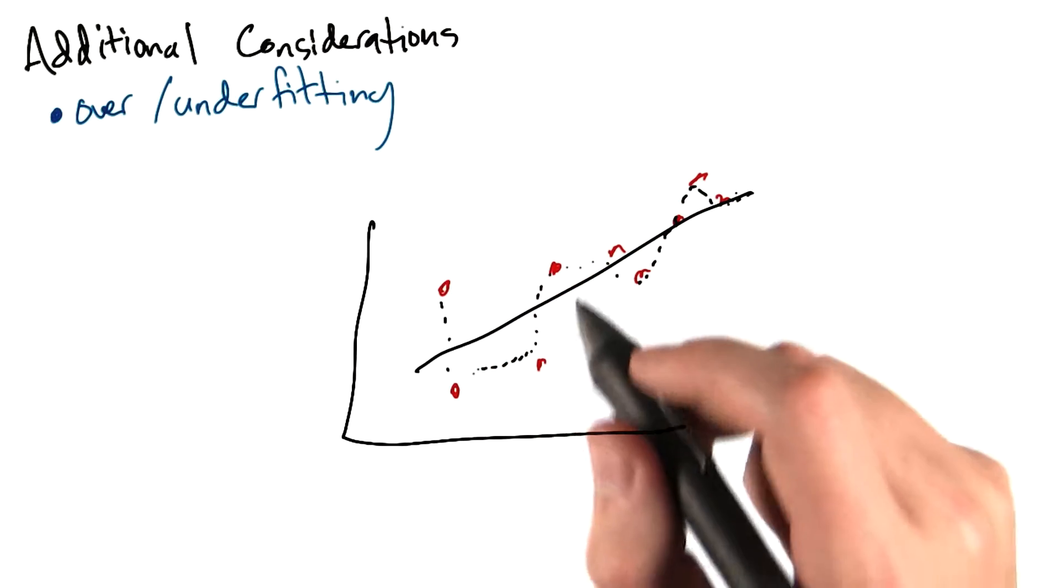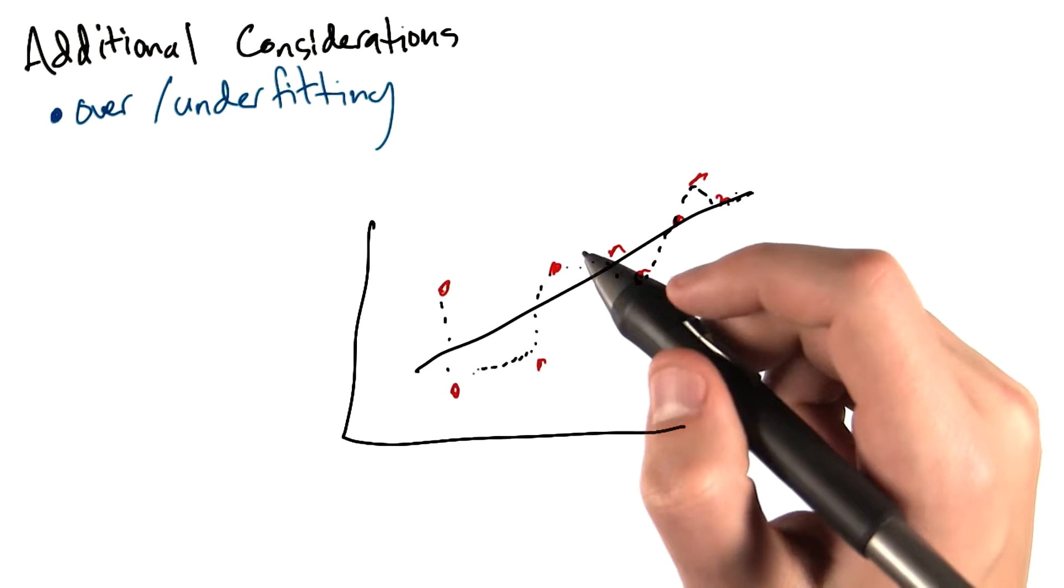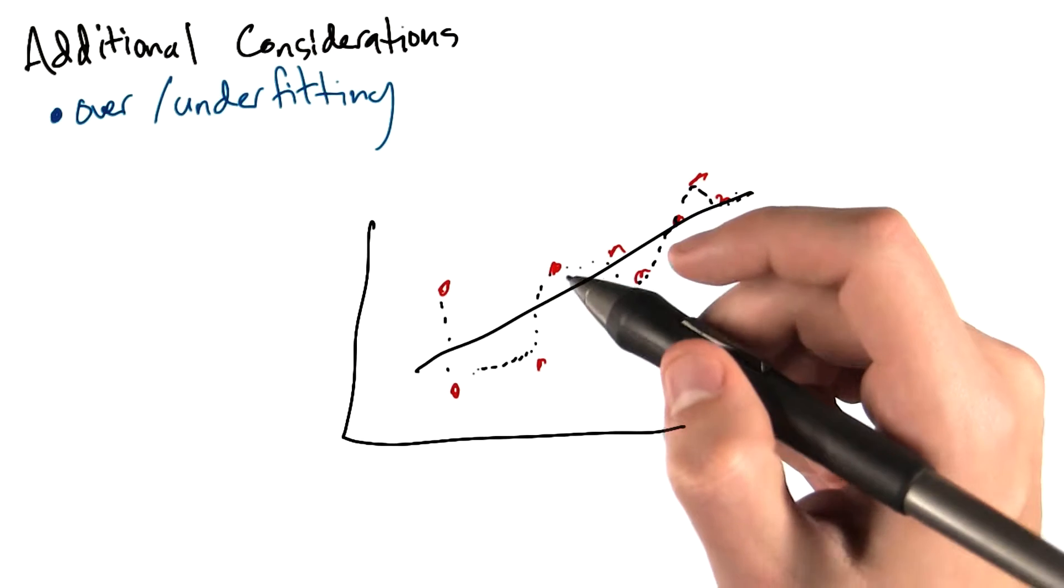We also might worry about issues like overfitting or underfitting. This isn't so much a problem with linear regression, but with more complicated models, you might expect our model to overfit.